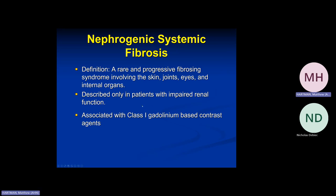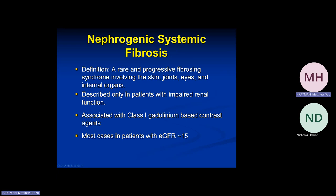Epidemiologists figured out these patients were all dialysis or chronic renal failure patients. Certain gadolinium-based agents were collecting in subcutaneous tissues and causing this scleroderma-like condition. The pendulum swung — we became very strict about who we gave gadolinium to, looking very closely at renal function, not giving it to dialysis or renal patients, especially anyone with a GFR less than 15.